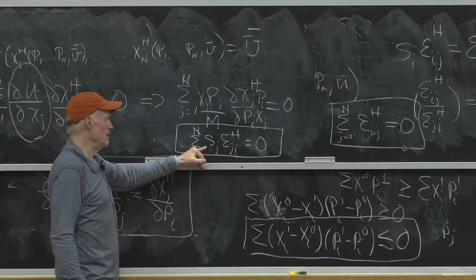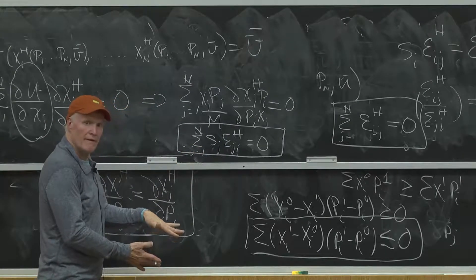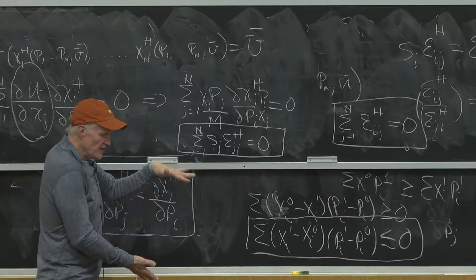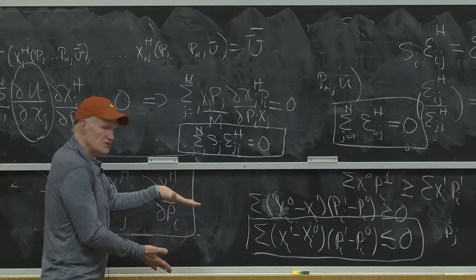Adding up is saying, as I look across the demand equations, whenever a price changes, all the goods have to change in such a way that weighted by their shares, the total change is zero.